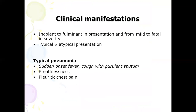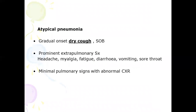Moving on to clinical manifestations: a patient with pneumonia may present with various manifestations, from indolent to fulminant, mild to fatal. Presentation can be typical or atypical. In typical pneumonia, the patient usually presents with sudden onset fever with chills and rigors, cough with purulent sputum, breathlessness, pleuritic chest pain, or even hemoptysis. In atypical pneumonia, there is usually gradual onset of dry cough, shortness of breath, and prominent extra-pulmonary symptoms such as headache, myalgia, fatigue, diarrhea, vomiting, or sore throat.